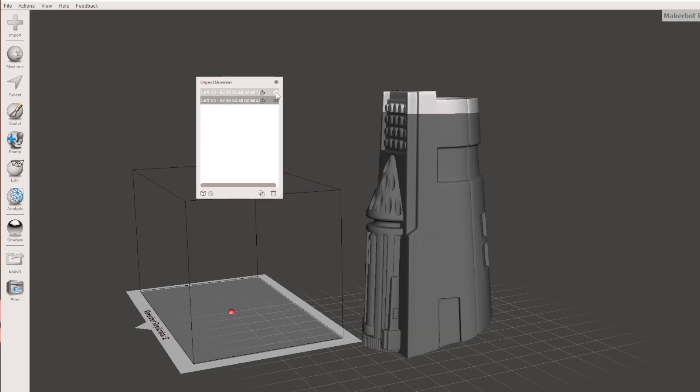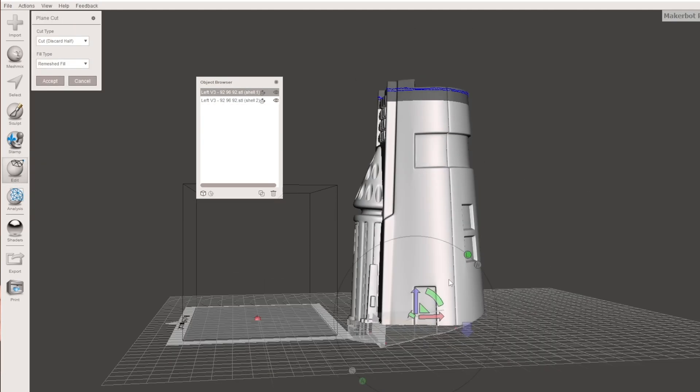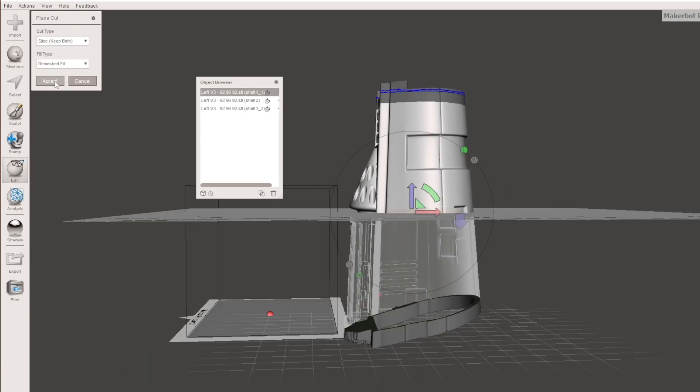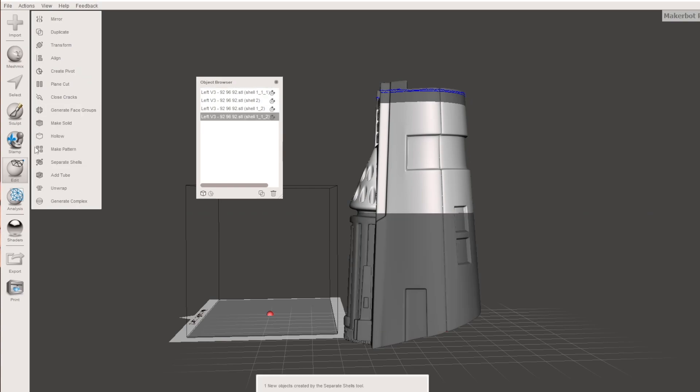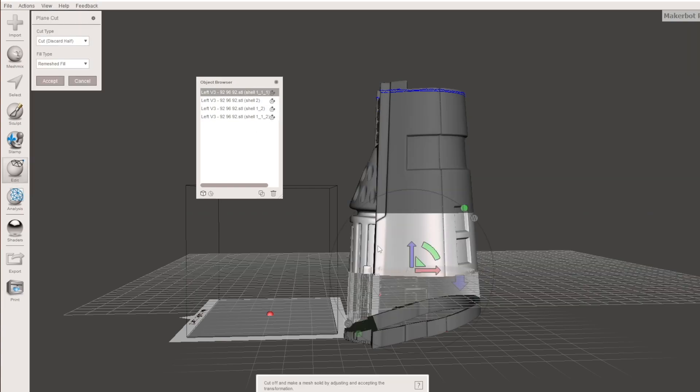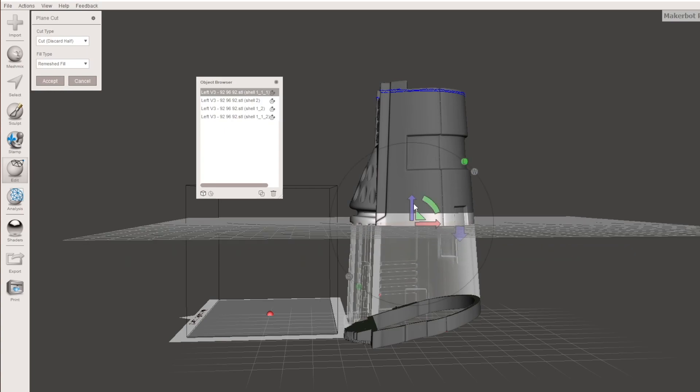I would just recommend doing like maybe a centimeter or so on the wrist part as well as on the back part. And then to do the plane cut in the middle if you so choose to do that you're just going to have to end up making a cut on the bottom as well as the top and then have that cut in the middle where you want it to be if that makes sense.